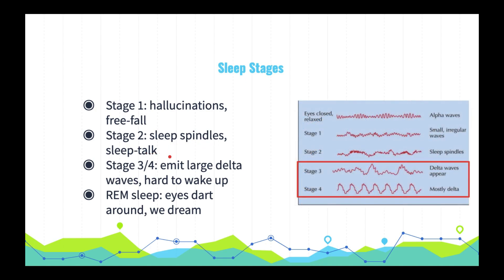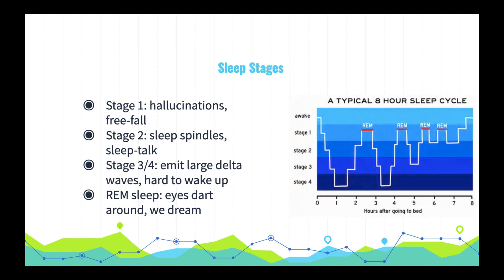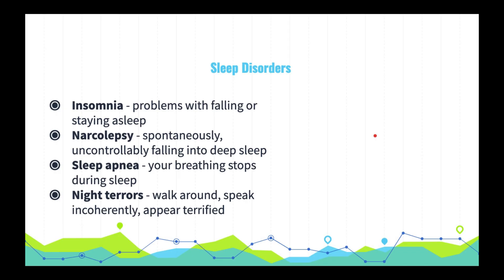In stages three and four we begin to emit slow, large delta waves and it's hard for us to be woken up. There's also REM sleep — rapid eye movement sleep — named such because our eyes dart around in this stage and we begin to dream. As we cycle through the different stages of sleep, we also enter REM sleep periods throughout the night, which you can see in this graph.